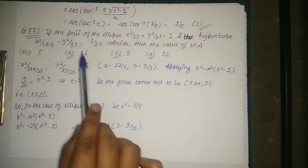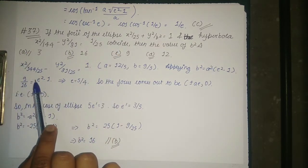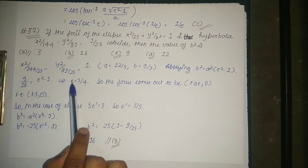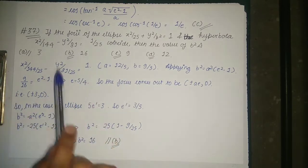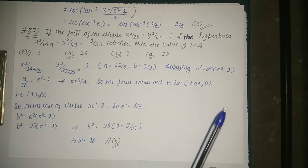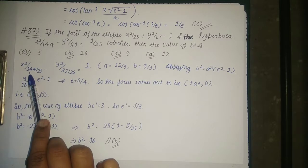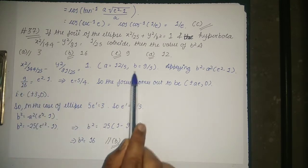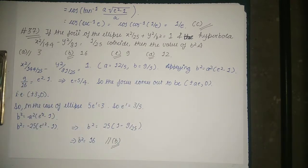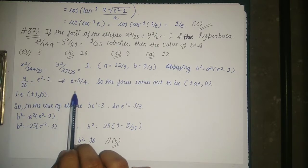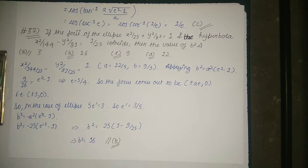First, let's find the focus of the hyperbola. Rewriting: x²/(144/25) - y²/(81/25) = 1, which is in the standard hyperbola form. So A = 12/5 and B = 9/5. Applying B² = A²(e² - 1), we calculate the eccentricity, which comes out to be 5/4. The focus is given by (±Ae, 0), so the focus comes out to be (±3, 0).